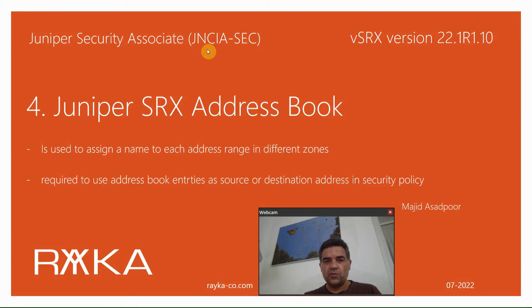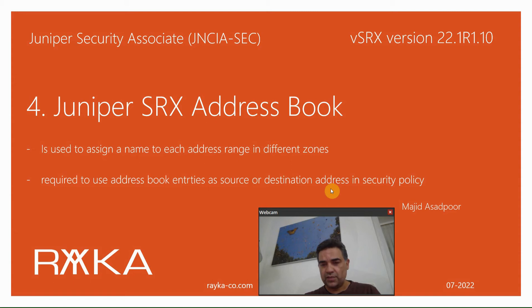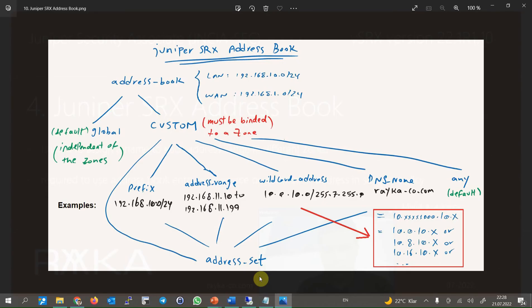Welcome to another video of the Juniper Security Associate course. In this section I will talk about the Juniper SRX address book concept and configuration. Address book is used to assign a name to each address range configured in different zones in the enterprise. When you configure a security policy, it is required to use address book entries as a source or destination address. Within the Juniper SRX address book, we assign a name for each address range used in the enterprise as an entry.